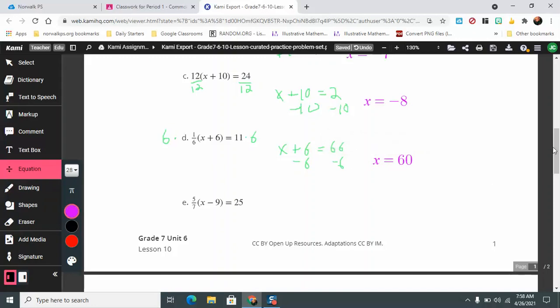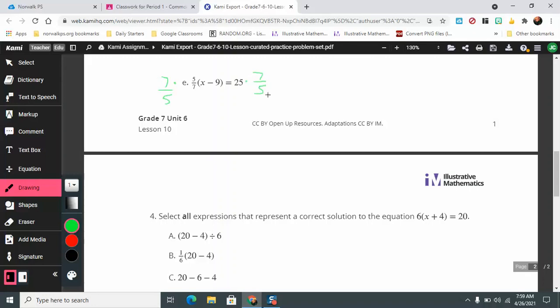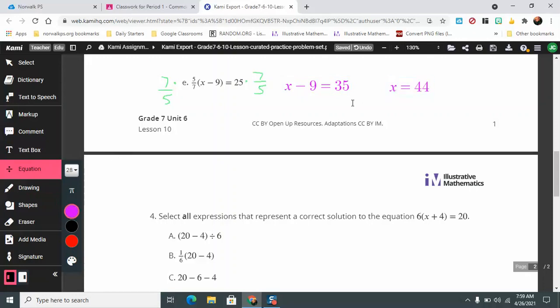You can check these answers. I do recommend you checking these answers when you're doing these on your own. With this case here, with a fraction, it's often very easy to just go ahead and multiply by the reciprocal of this fraction. Five-sevenths, we're going to multiply by seven-fifths on both sides. That gets rid of the fraction, makes it 1, and then just leaves us with x minus 9. But over here, seven-fifths, we're going to go 25 divided by 5, which is 5, then times 7, that's 35. That means that x minus 9 is going to equal 35. If I add 9 on both sides, that means x is going to equal 44.